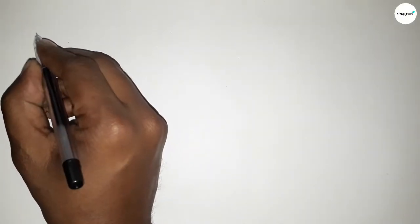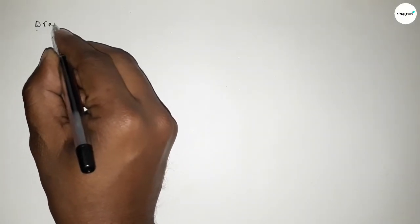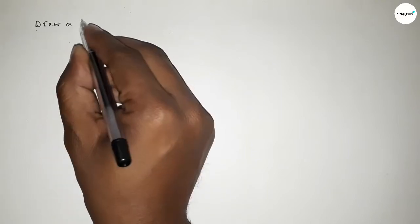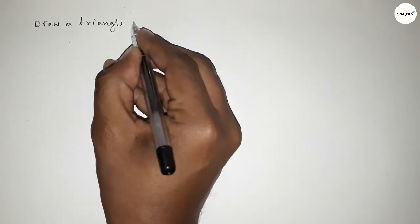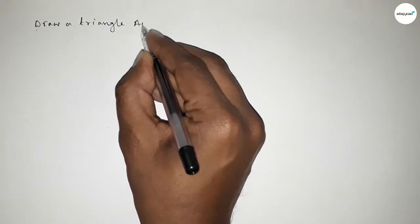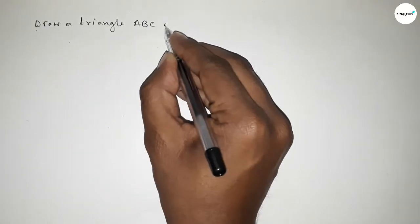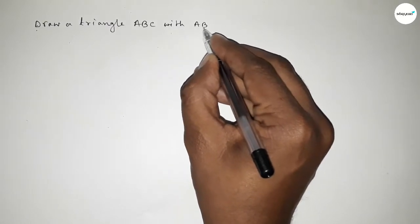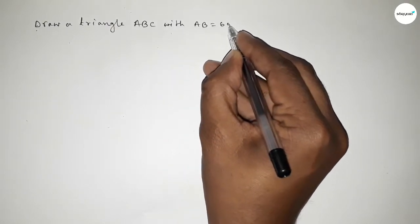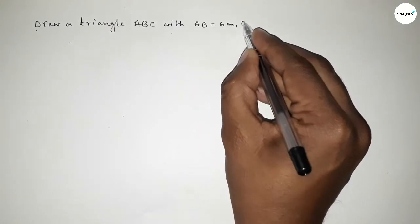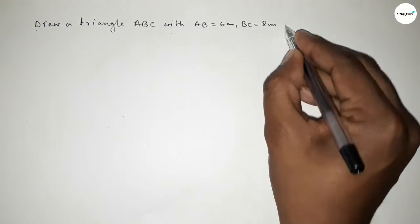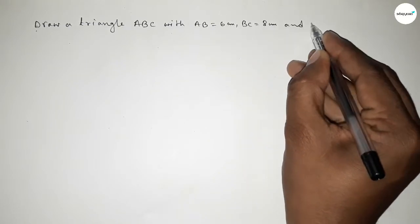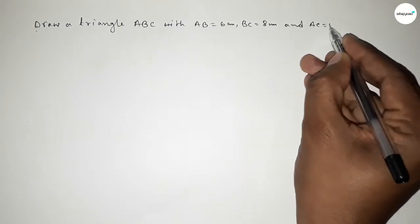Hi everyone, welcome to a size share class. Today in this video we have to draw a triangle ABC with AB equal to 6 centimeters, BC equal to 8 centimeters, and AC equal to 10 centimeters. So let's start the video.